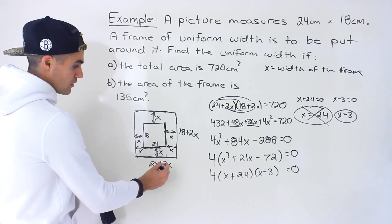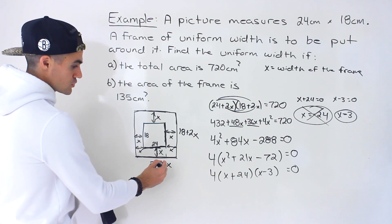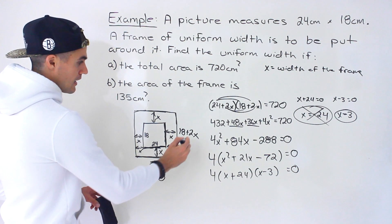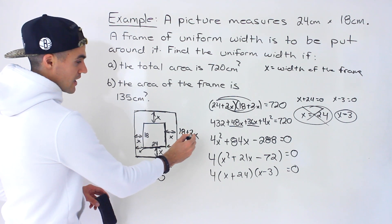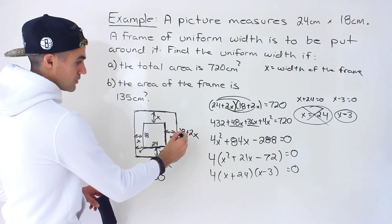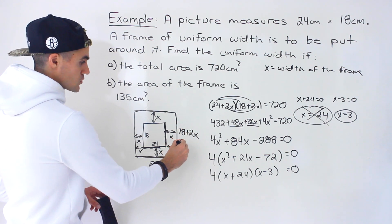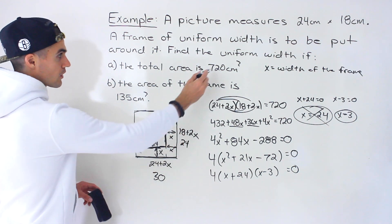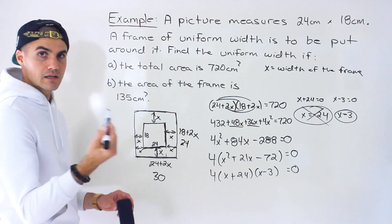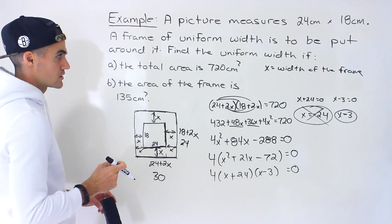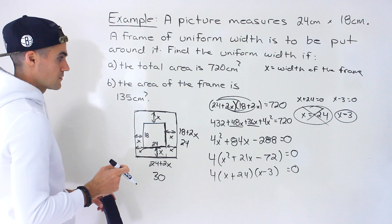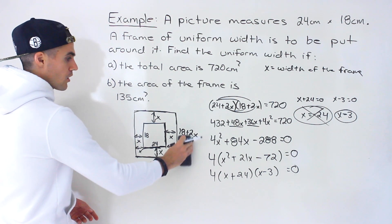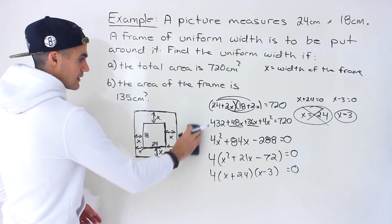That's the answer to part A: if the total area is 720 centimeters squared, the uniform width of the frame is 3 centimeters. We can verify: plugging in 3 gives dimensions of 30 by 24, and 30 times 24 does indeed equal 720 centimeters squared.